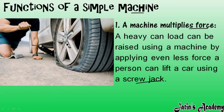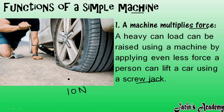By using the screw jack, we first lift the car up and afterward change the tire. What is happening here is that we are applying very little force to move this machine, but the machine is lifting a much heavier load. For example, if we apply 10 newton of force to move the screw jack, the screw jack lifts up a 500 newton object — it multiplies our force.